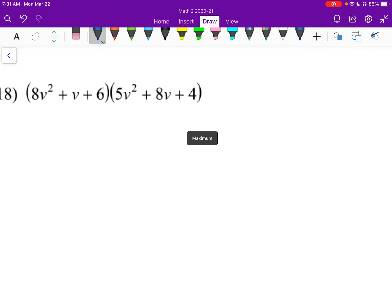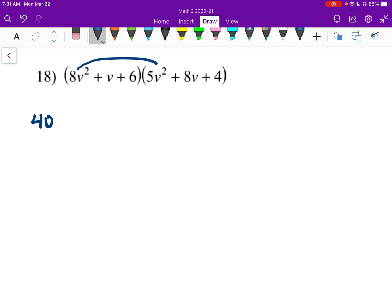8 times 5 is 40, v to the 4th, right? V squared and v squared gives me v to the 4th. And then I'll have 8 times 8 is 64, 64v cubed, plus 32v squared, plus 32v squared, plus 5v cubed.